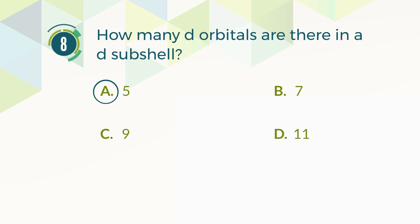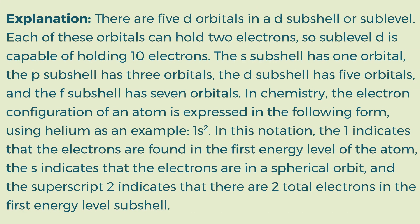The answer is A, 5. There are 5 D orbitals in a D subshell or sublevel. Each of these orbitals can hold 2 electrons, so sublevel D is capable of holding 10 electrons. The S subshell has 1 orbital, the P subshell has 3 orbitals, the D subshell has 5 orbitals, and the F subshell has 7 orbitals. In chemistry, the electron configuration of an atom is expressed using a notation such as 1s² for helium, where the 1 indicates the first energy level, S indicates a spherical orbit, and the superscript 2 indicates 2 total electrons in that subshell.